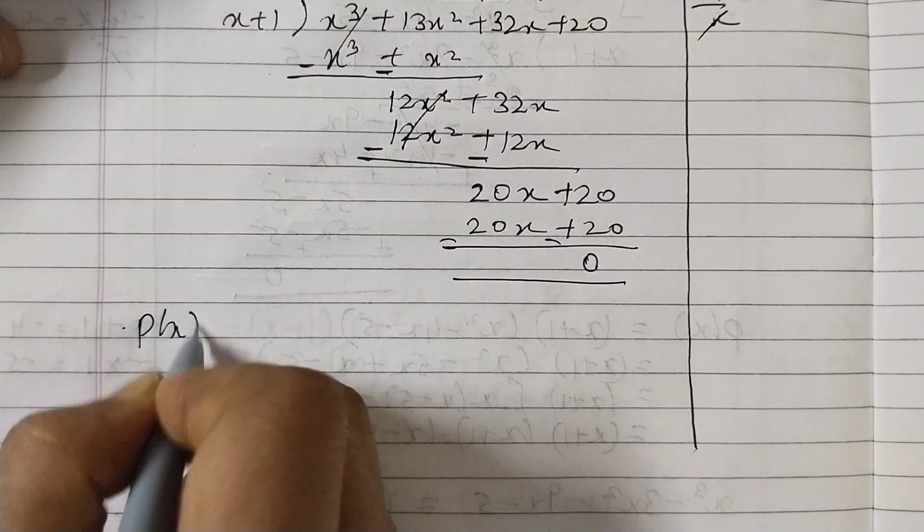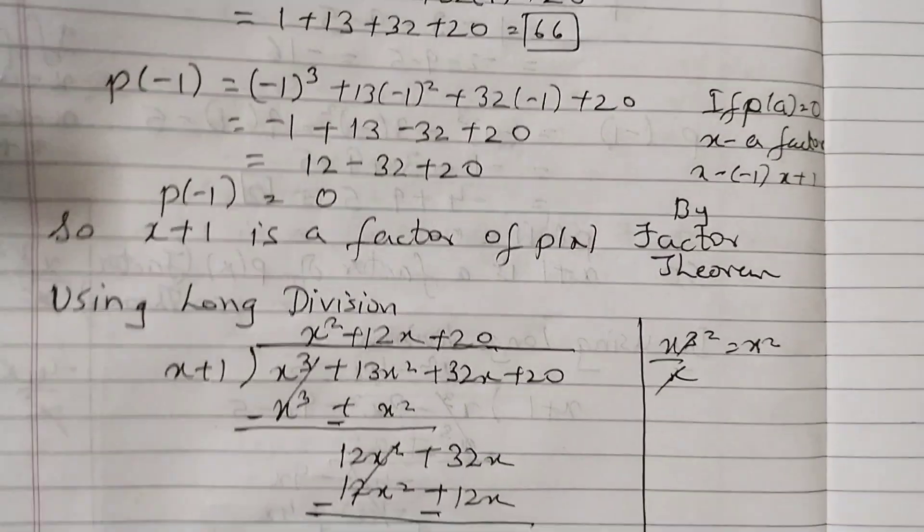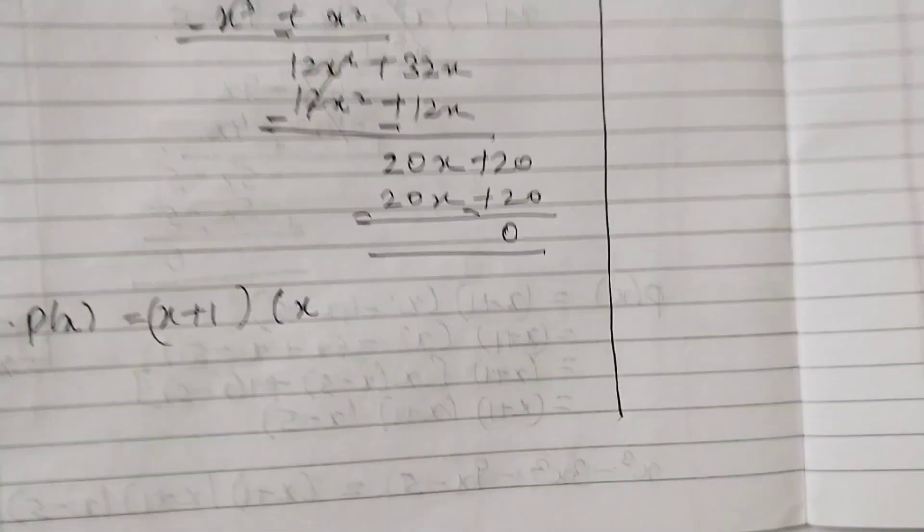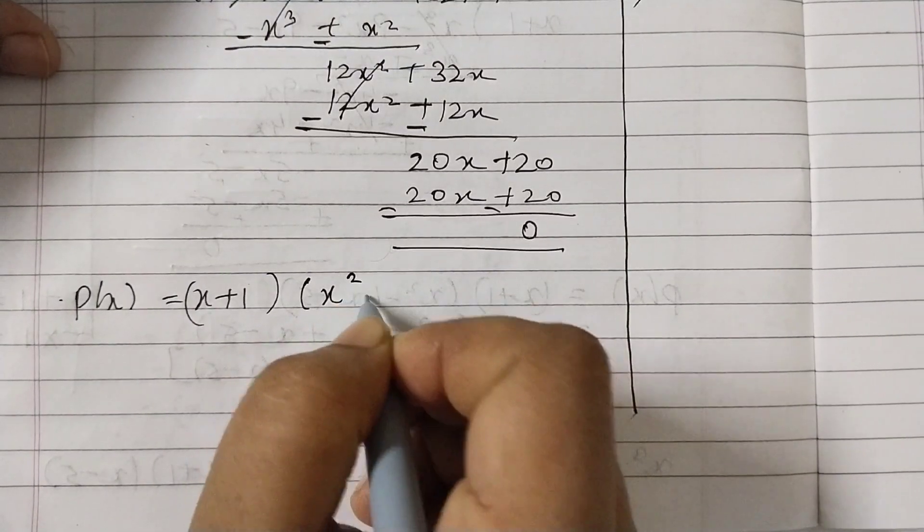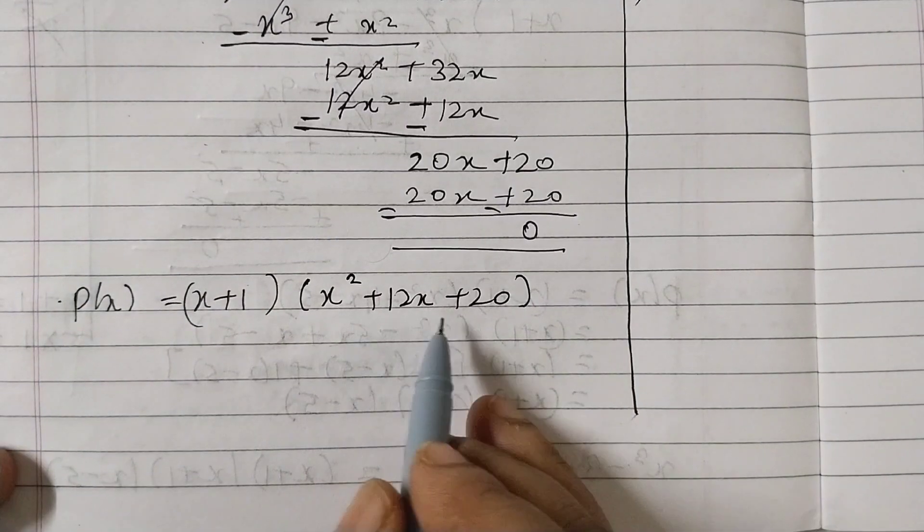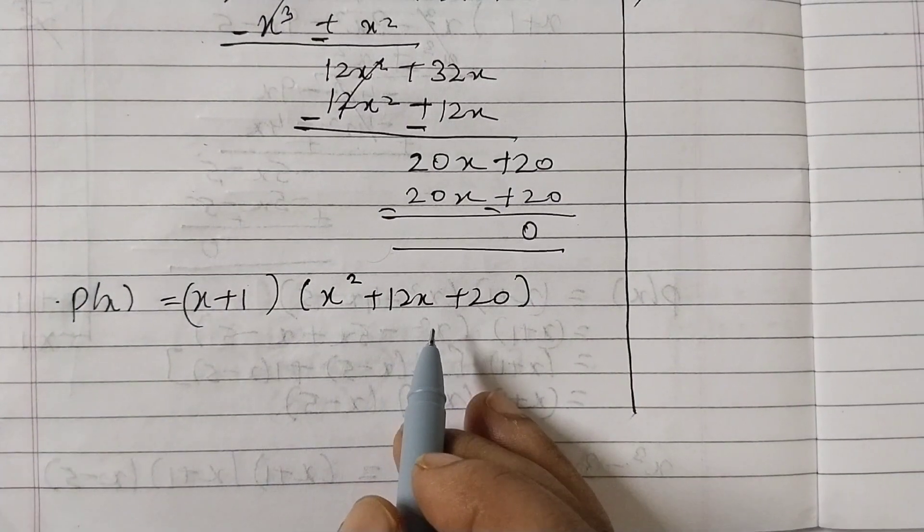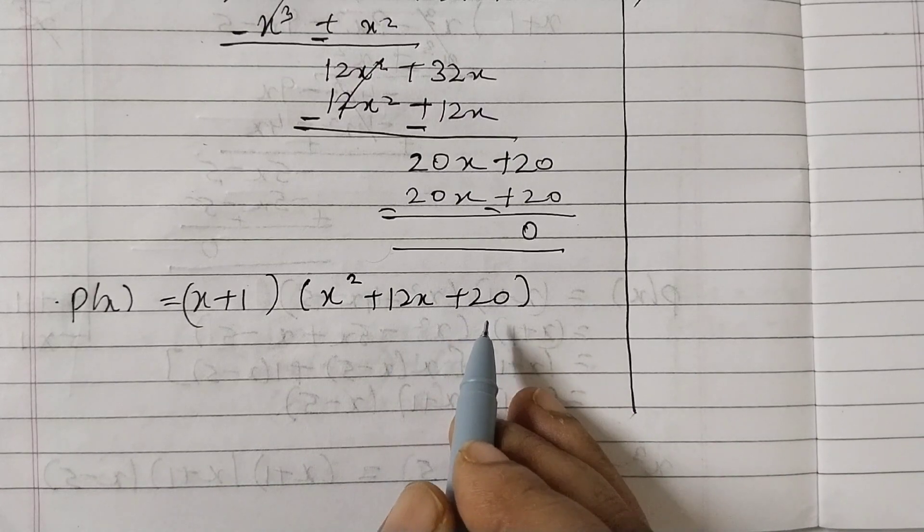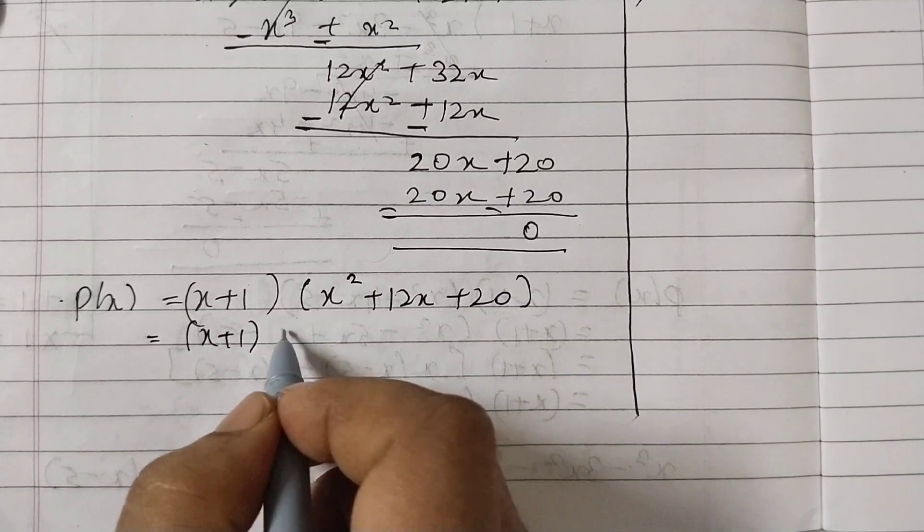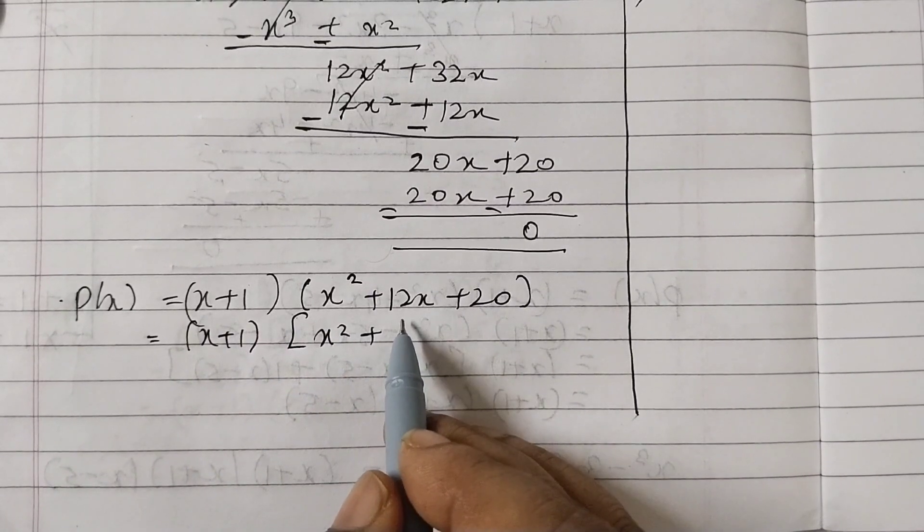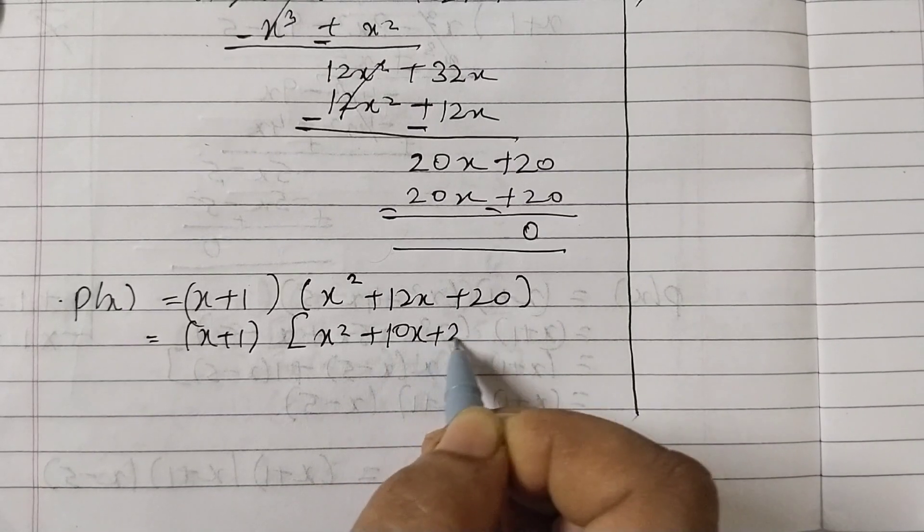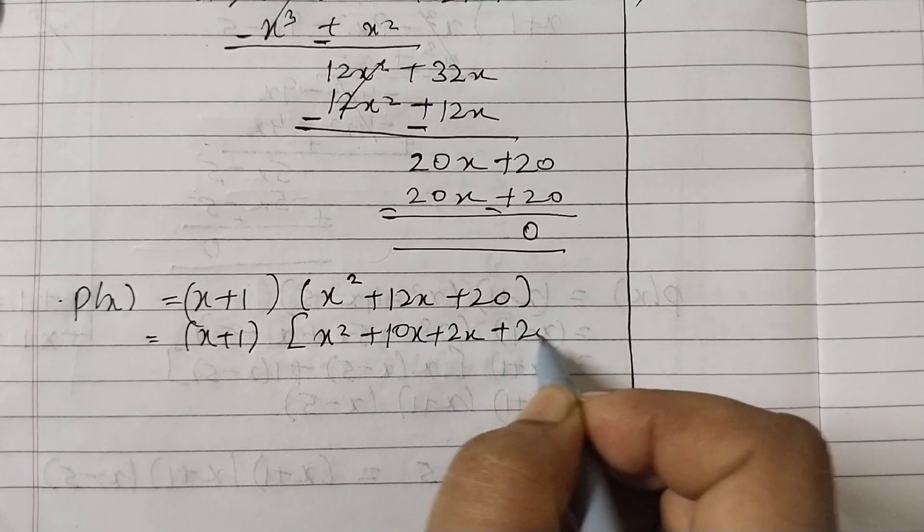So write p(x) = (x + 1)(x² + 12x + 20). This we will further factorize by splitting the middle term. We need two numbers which add up to 12 and multiply to 20. = (x + 1)(x² + 10x + 2x + 20). 10 + 2 = 12, 10 × 2 = 20.